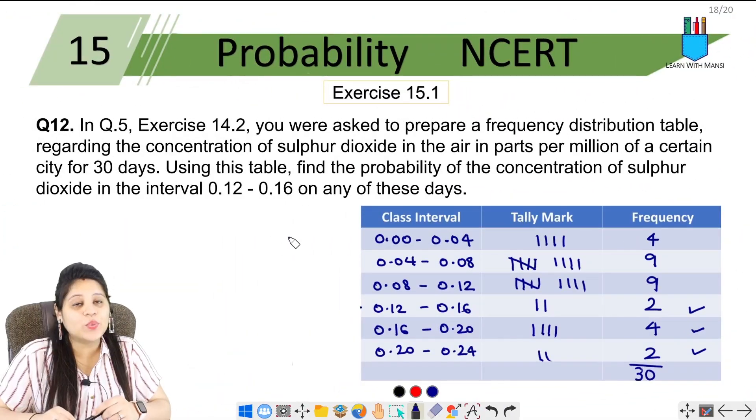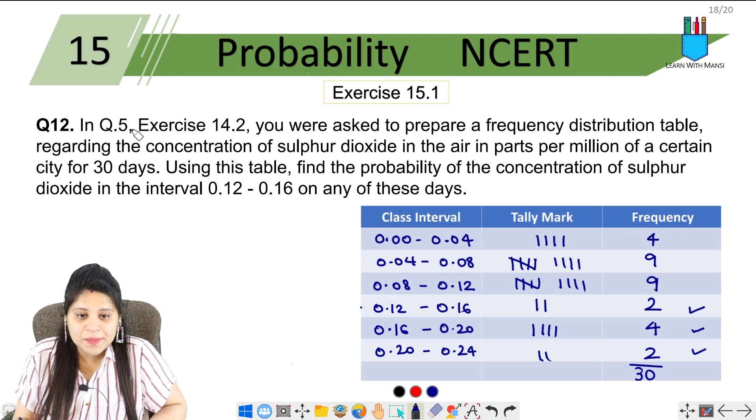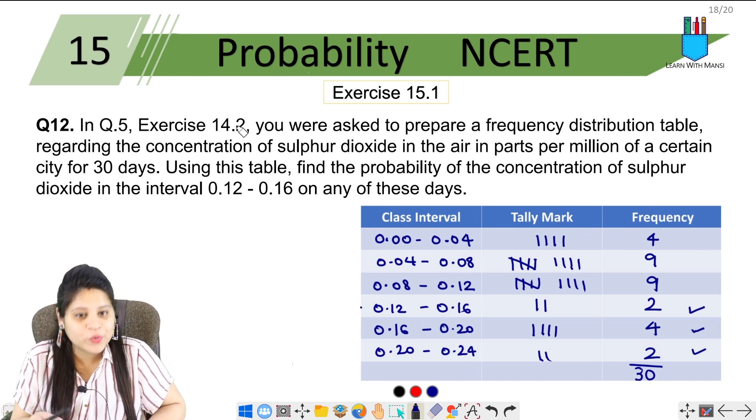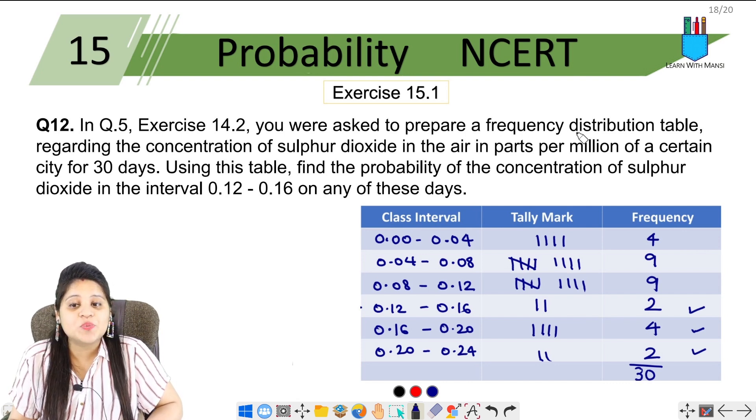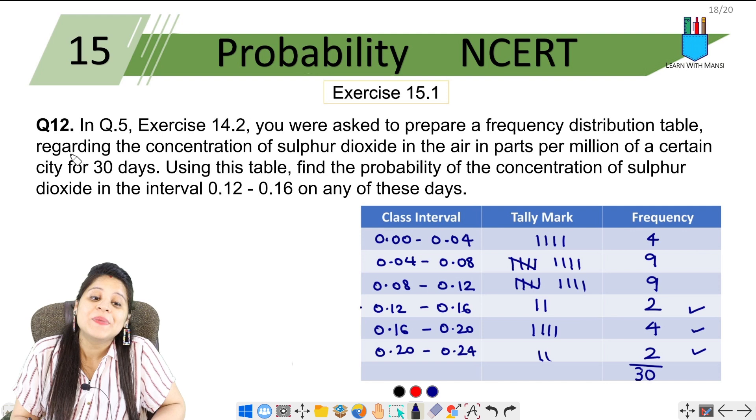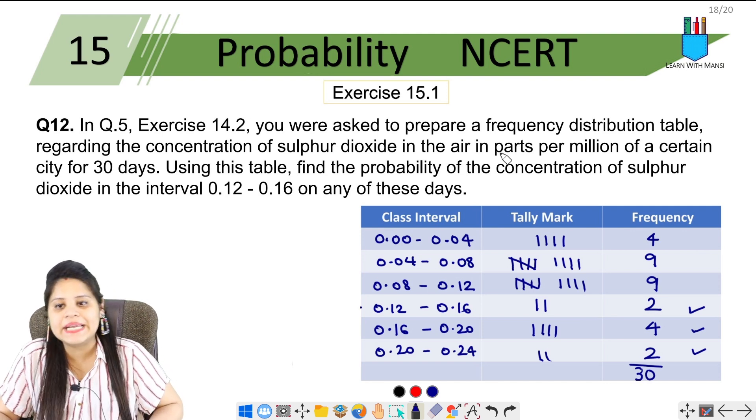Now we are on the 12th question of Exercise 15.1. The question says: In question number 5, Exercise 14.2 - go to chapter 14, Exercise 14.2, question 5 - you were asked to prepare a frequency distribution table regarding the concentration of sulfur dioxide in the air.